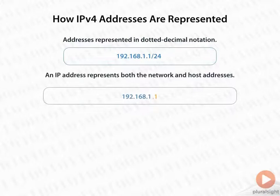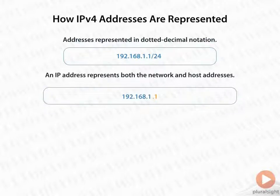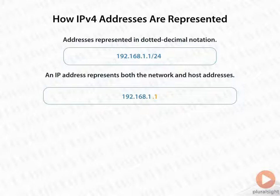An address like this one represents two different things — it represents the network and the host address. So in this example, 192.168.1 would be the network, and the .1 in the last octet would be the host.